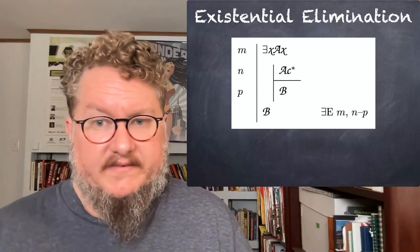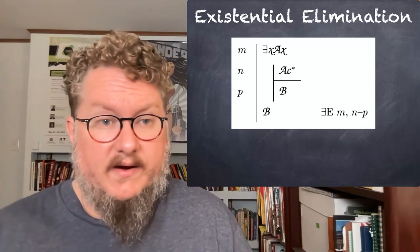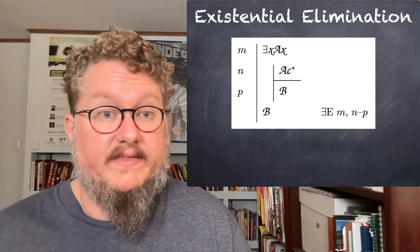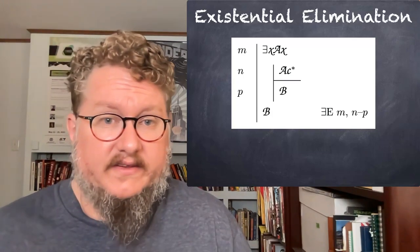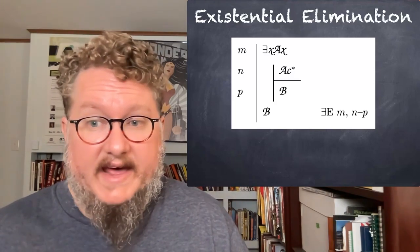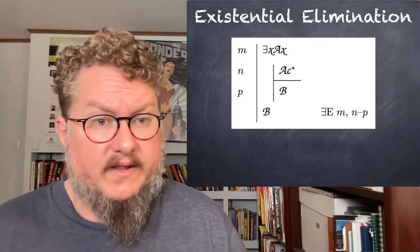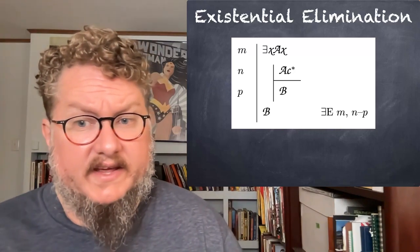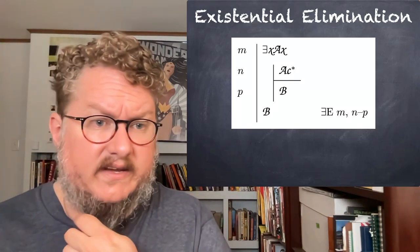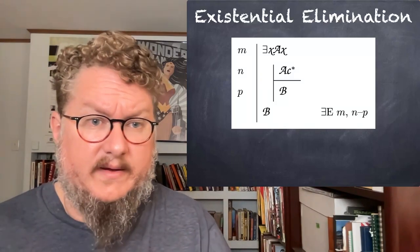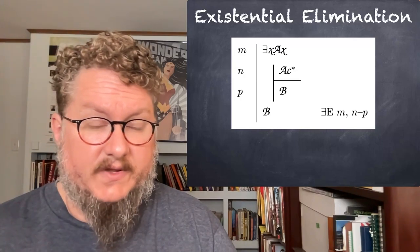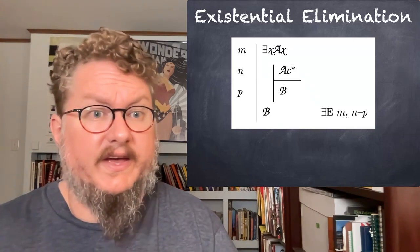Again, this is to capture the fact that it has to be an arbitrarily chosen constant. You have to get rid of that constant before you exit the sub-proof. Because we know that something exists that satisfies A — that's what line M tells us — but we don't know what it is. We're using C to refer to it temporarily as a placeholder.